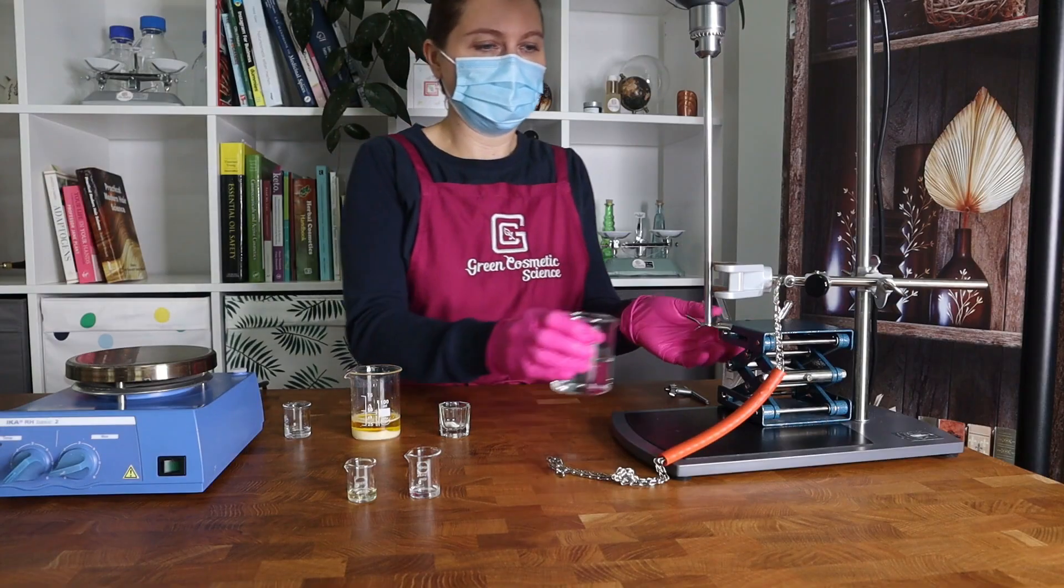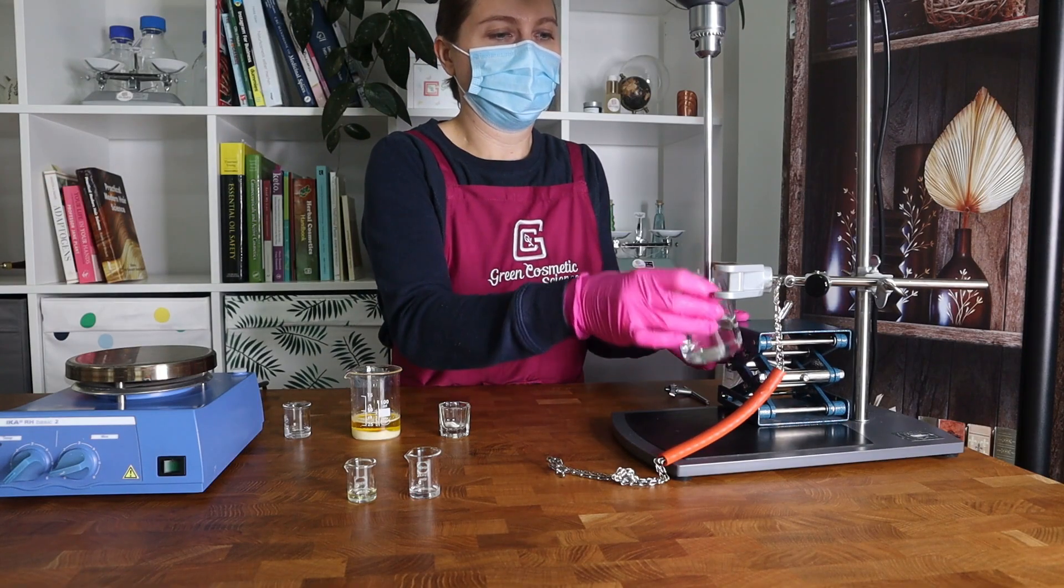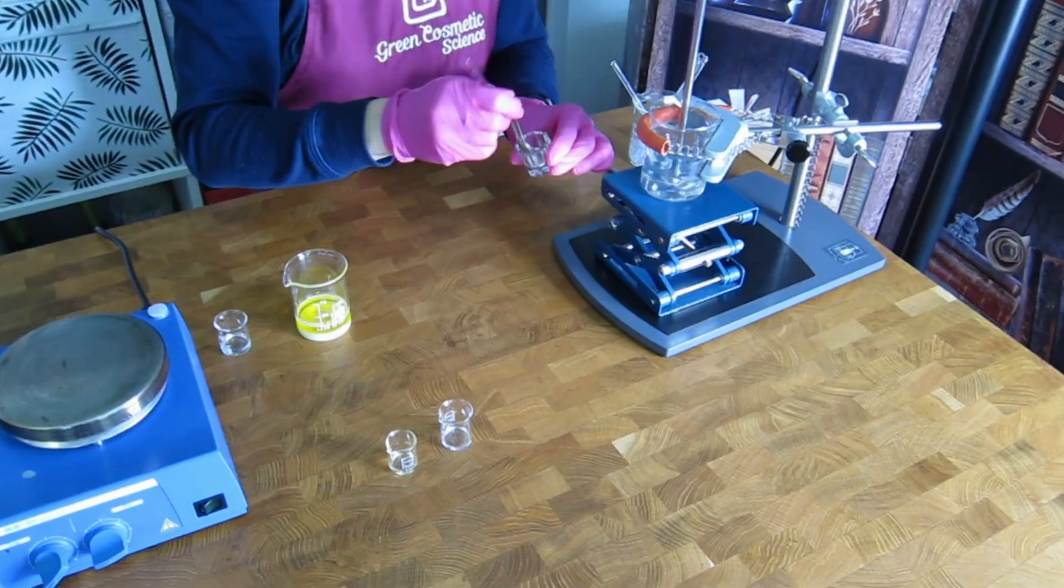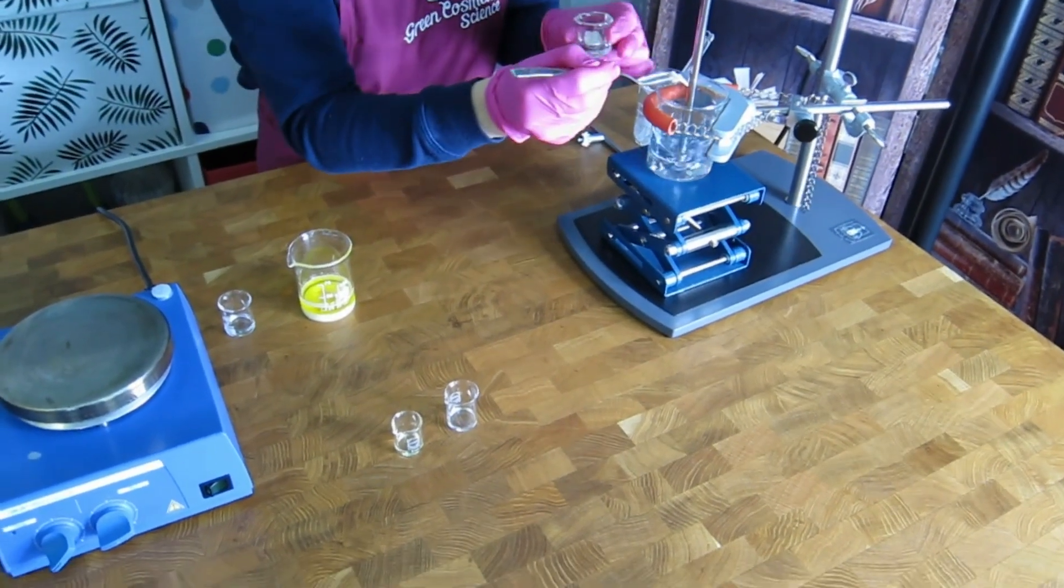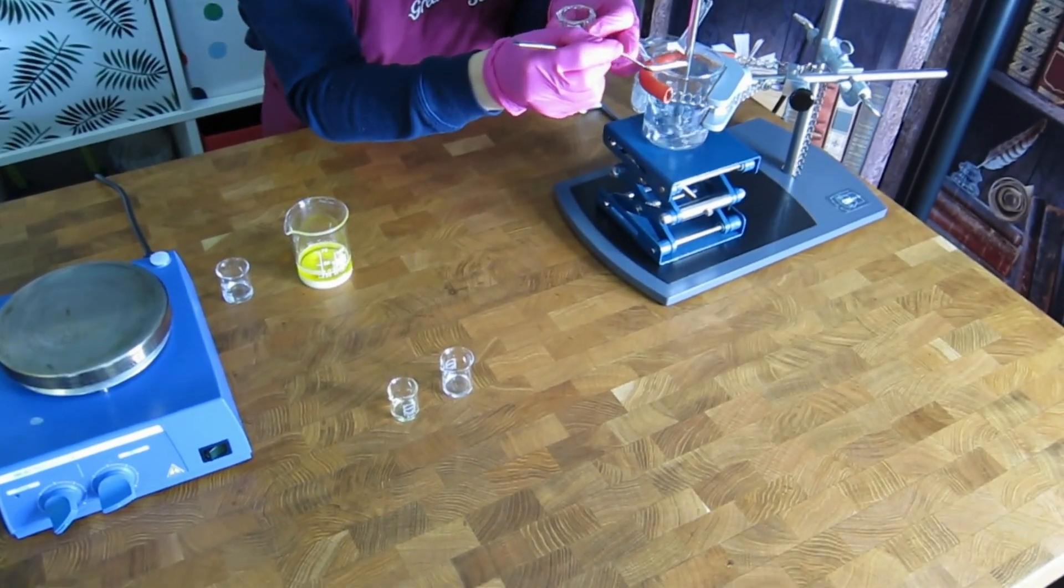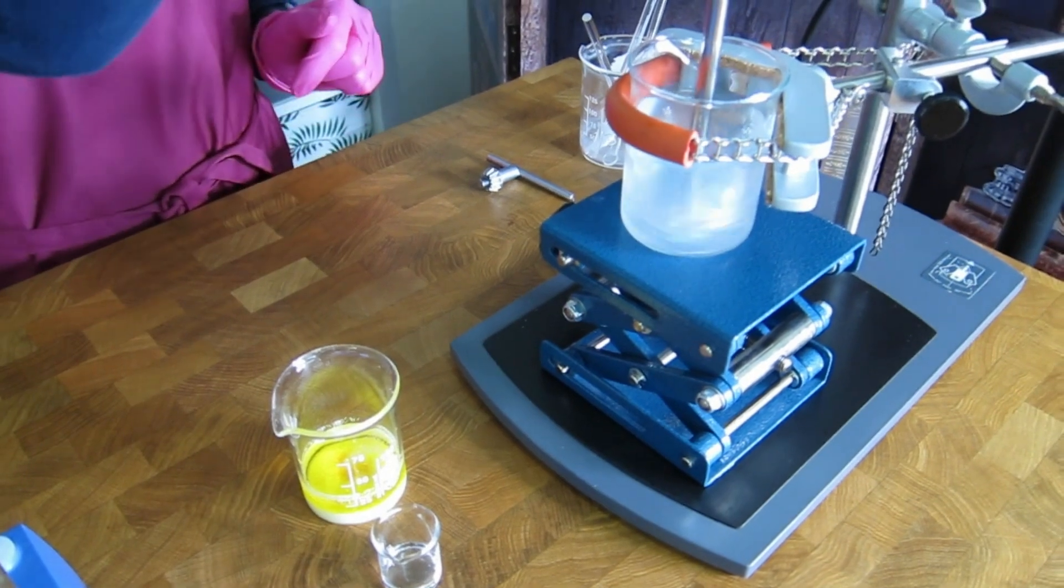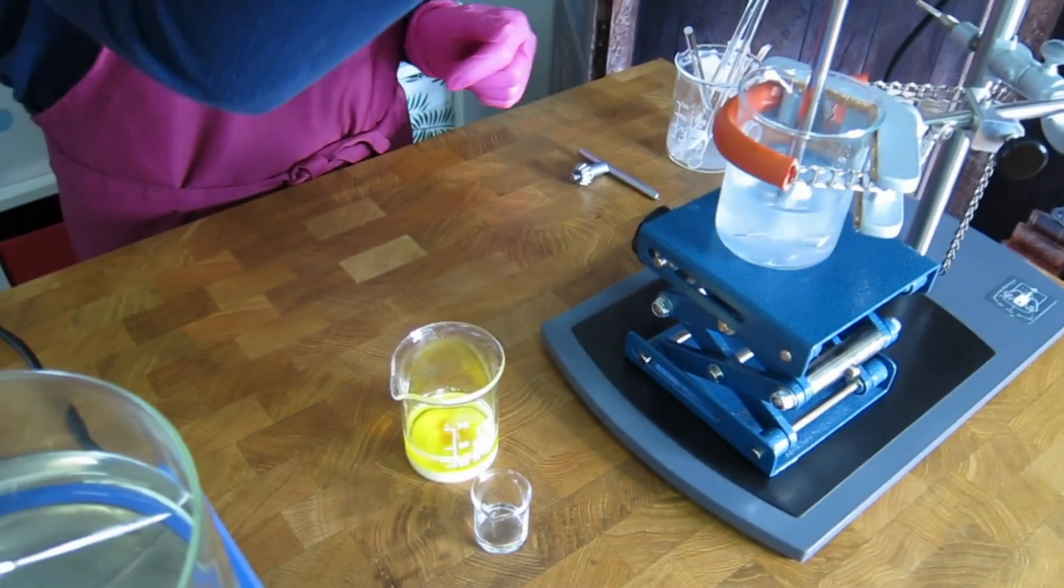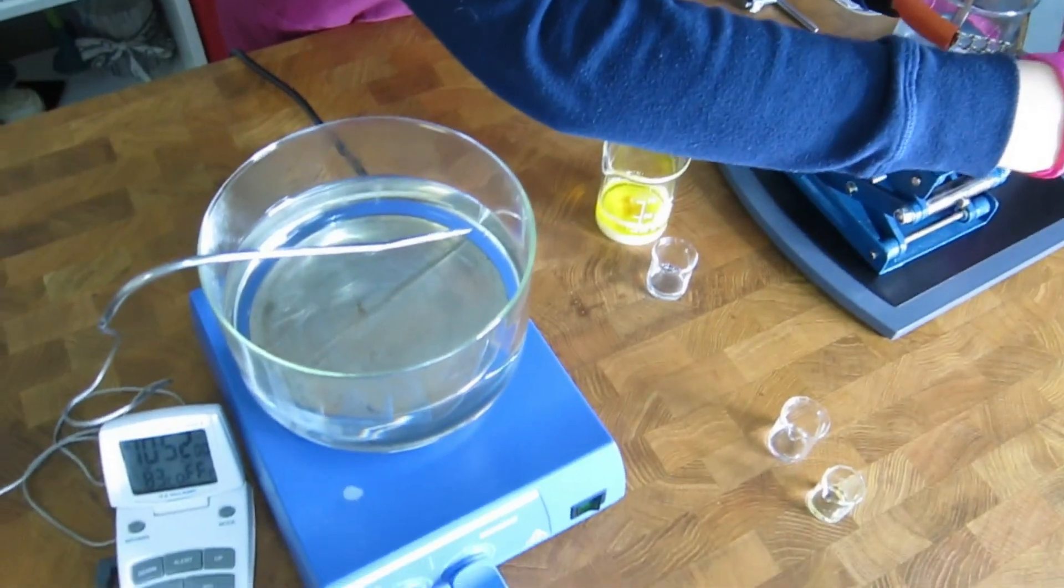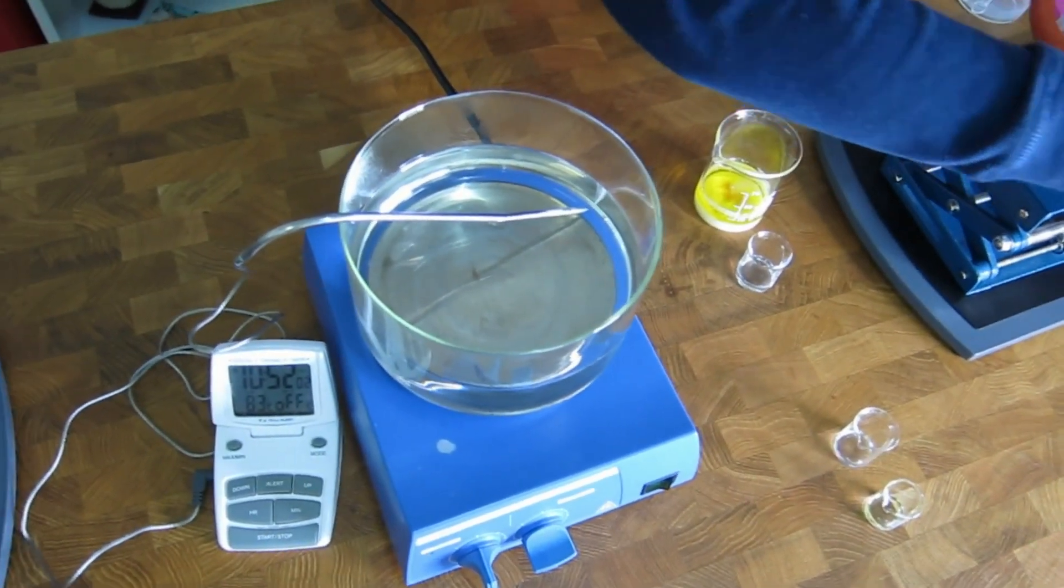Blend the ingredients of phase A together, and then disperse the gum in the water phase and hydrate it for about 20 minutes. The gum is fully hydrated now, and now we will put the oil and water phase in the water bath and heat both of them.